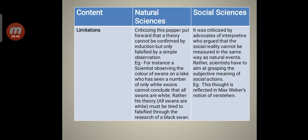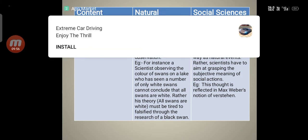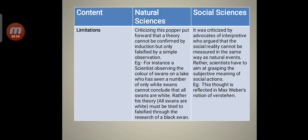Now along with these advantages there are some limitations also of this natural and social science. Let's understand these here. Criticizing this, Popper put forward that a theory cannot be confirmed by induction but only falsified by a simple observation. For example, for instance, a scientist observing the color of swans on a lake who has seen a number of only white swans cannot conclude that all swans are white. Rather, his theory all swans are white must be tried to be falsified through the research of a black swan.